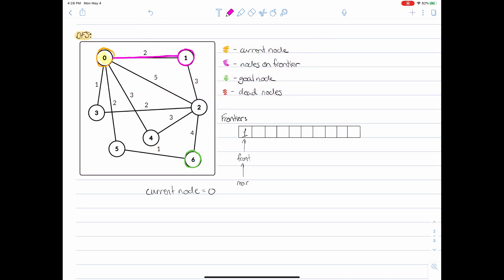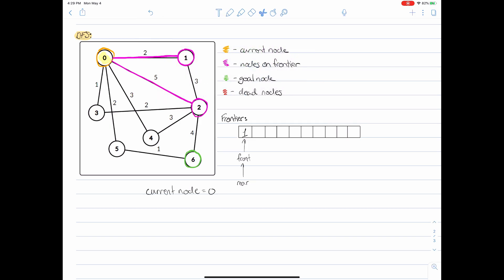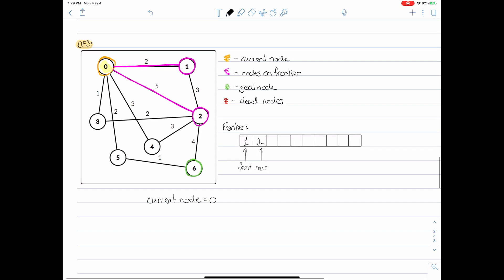Then we're going to go to our next successor of node zero which is node two. And then we pop the big question: Is this node the goal node? Well once again it's not the goal node. So this node now needs to be added to the frontier. Once again take this rear pointer, move it forward one slot and add the new node to the frontier.